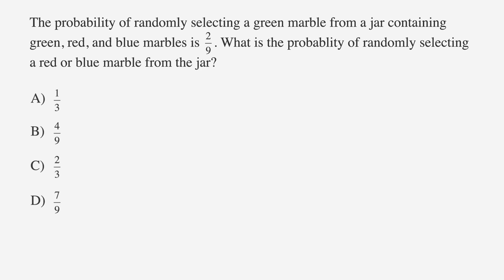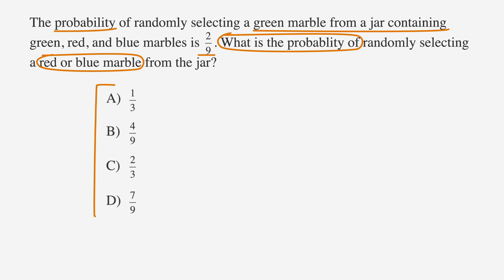The probability of randomly selecting a green marble from a jar containing green, red, and blue marbles is 2 over 9. What is the probability of randomly selecting a red or blue marble from the jar? Our answer choices are one-third, four-ninths, two-thirds, and seven-ninths. Let's start by underlining the facts, circling the key terms, and labeling the answer choices, which are possible values for selecting a red or blue marble. We're looking for the probability of choosing a red or blue marble out of a selection of red, blue, and green marbles.